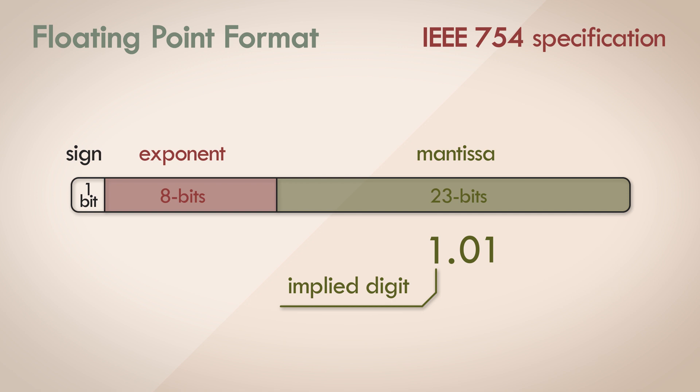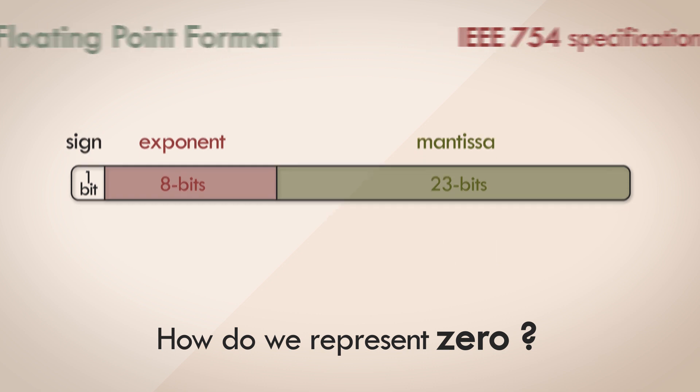But this gives rise to a tricky situation. If the value of the mantissa is always one point something, then how do we represent zero? That's where the special conditions come in.